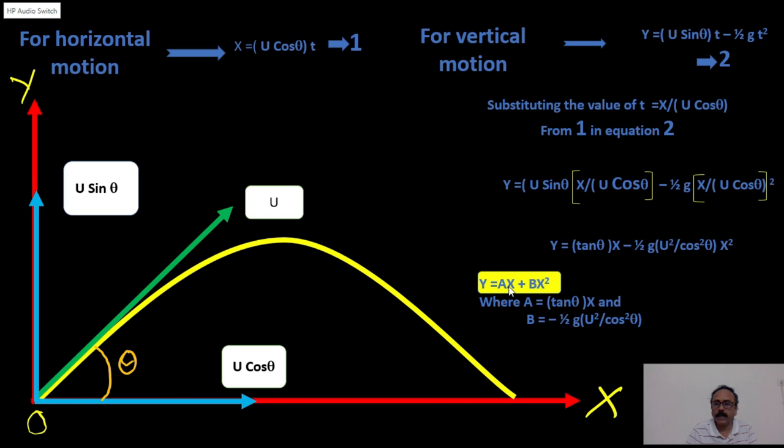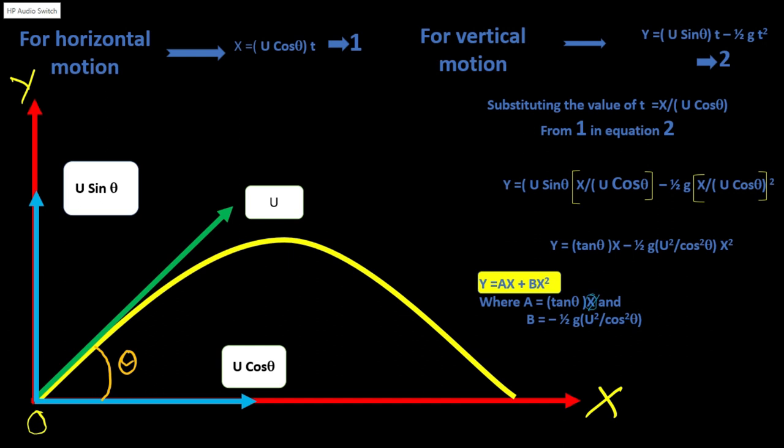So, it can be represented as y equals a x plus b x square where a equals tan theta and b equals minus half g divided by u square cos square theta. This equation is really very important in solving some of the numericals because it gives a relation between the horizontal range covered and then vertical height. When you know the value of initial velocity and then you know the angle of projection, then we can find a relation between the vertical height covered and the corresponding horizontal range covered at that particular point of time.